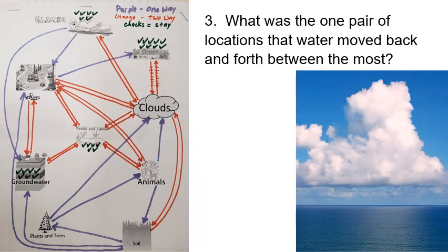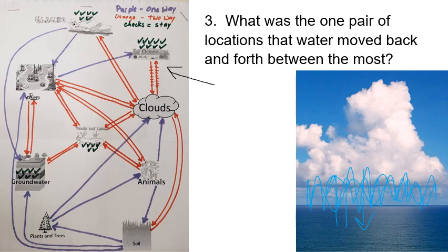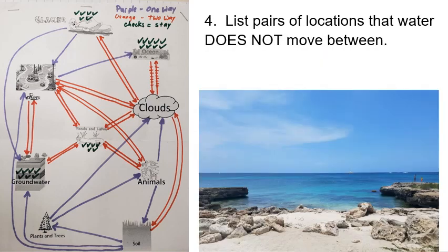Where does water move back and forth the most? On our diagram we put tick marks on the arrows. The place we saw this happen most was between clouds and the ocean. Water evaporates from the ocean very easily, and clouds dump their water quickly. Since 70% of the planet is ocean, most clouds drop their water right back into the ocean constantly. Water evaporates from the ocean, makes a cloud, rains back into the ocean — this is where water goes back and forth the most.